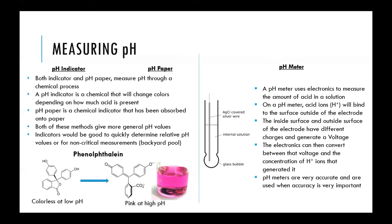Measuring pH in a lab setting can be done in a number of ways. The two main groups are either chemically or electronically. pH indicators involve adding a chemical — usually a liquid solution — where a color change is based on a chemical reaction dependent on the amount of acid in the solution.